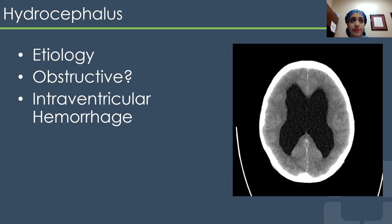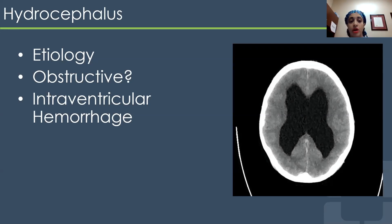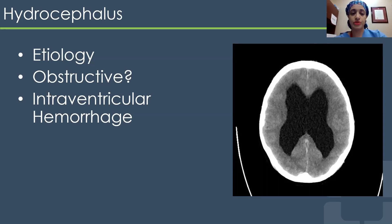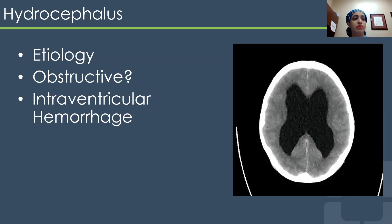Being comfortable communicating that intraventricular hemorrhage throws a wrench into things is important. For instance, having a plan: I would still place a drain to treat hydrocephalus, but understanding that if the drain clots off, I might need to consider next steps — whether injecting something through the catheter to dislodge the clot, intermittent drainage, or lumbar drains, which are more common in aneurysmal CSF diversion. Being able to communicate that you've thought through these potential complications is always impressive on the wards.